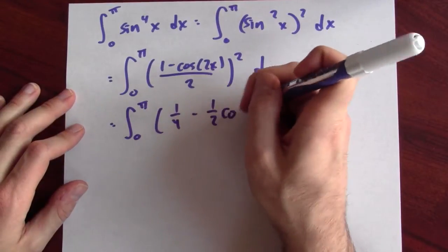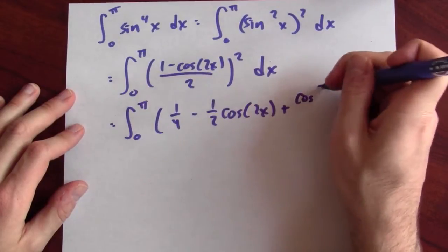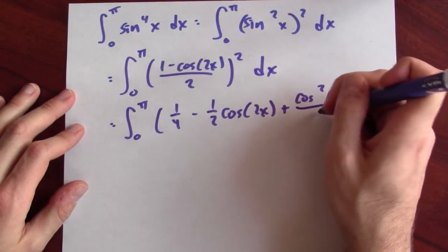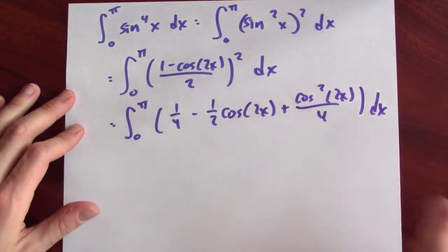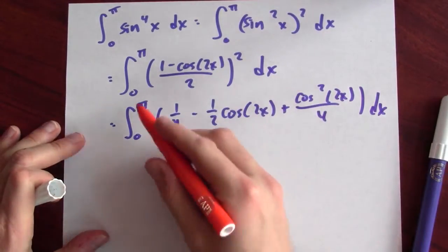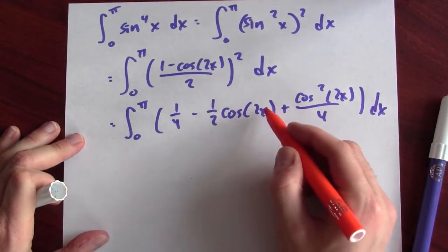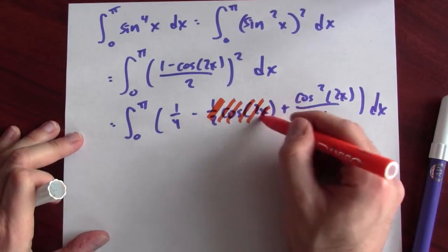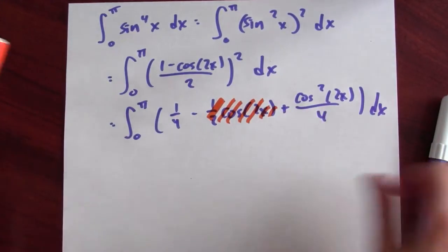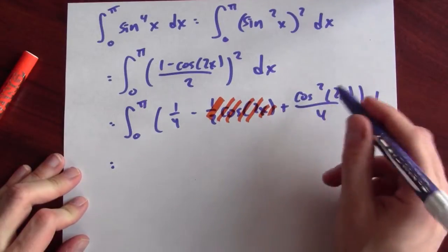So this is the integral from 0 to pi of 1 fourth minus, the cross term is 1 half cosine 2x, and then plus the cosine term squared, cosine squared 2x over 4. But now there's a little trick. I'm integrating from 0 to pi cosine, right? I'm integrating cosine over an entire period. And that ends up being 0. So I can just throw this whole term away.